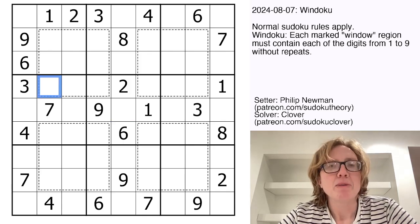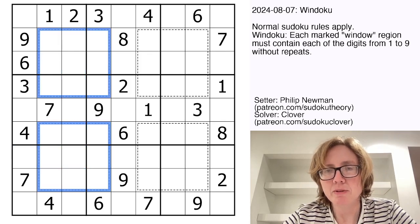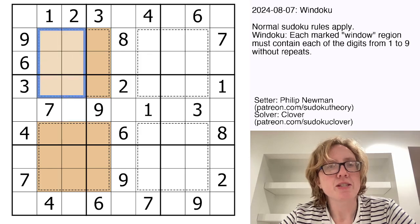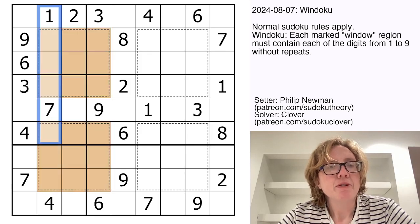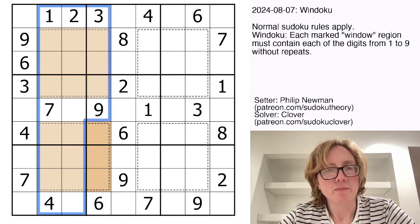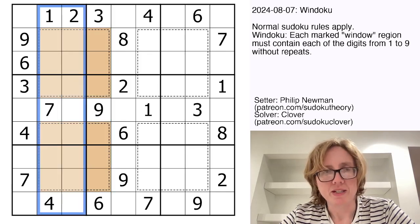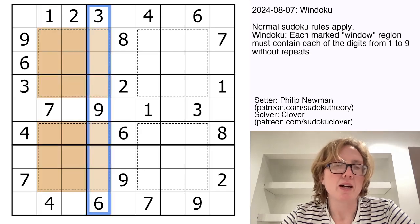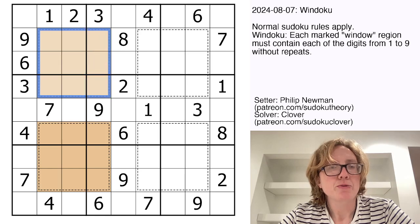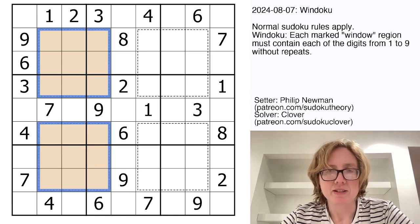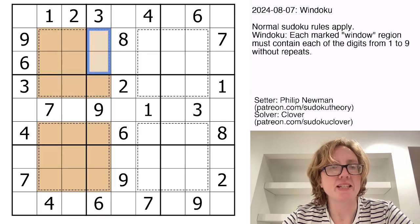So the way this works is each of these regions, and I'm going to just color two of them for now, we're going to color them orange. Each of these regions is a set of one through nine. Now, if you compare that to these three columns, for example, in each of these columns, we have a set of one through nine. So between these three columns, we have three full sets of the digits one through nine. And then in these two orange regions, we have a total of two full sets of the digits one through nine. So in these three columns, two of their three sets are contained in these two orange regions.